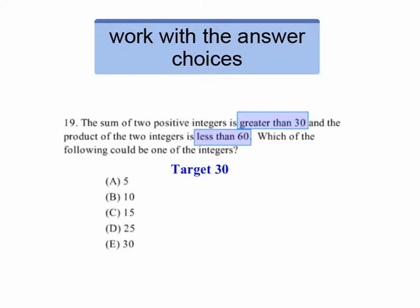Easiest thing to do is just see what would equal 30 and work from there. Now, if we look at 5, we see that 5 plus 25 equals 30. 5 times 25 is 125, so that's way past 60. So that eliminates A and D.